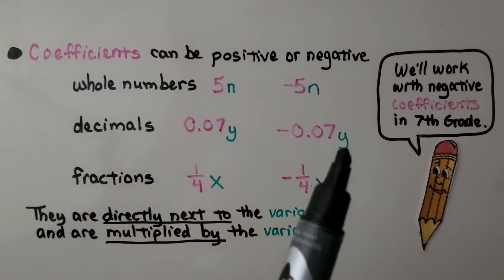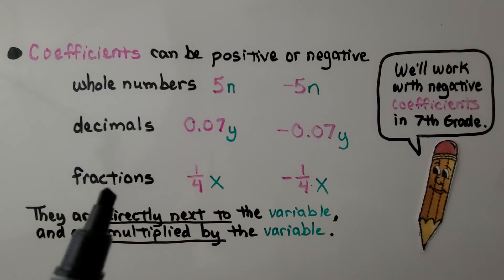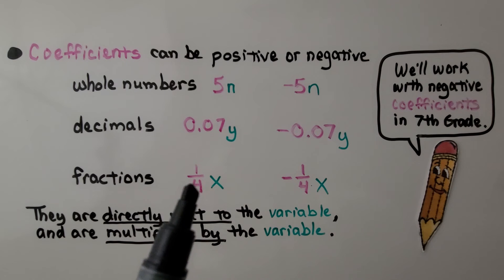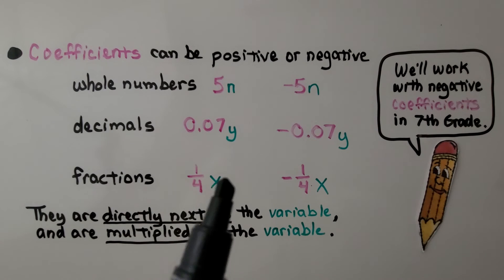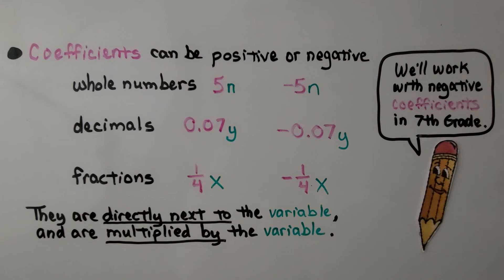They can be positive or negative fractions. We have 1 fourth x. Here we have negative 1 fourth x. They are directly next to the variable and are multiplied by the variable. And we'll work with negative coefficients in 7th grade.